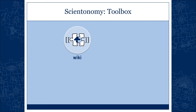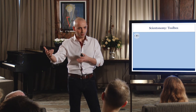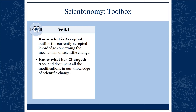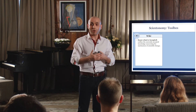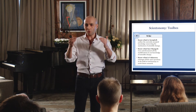The next thing we need is a wiki. While the database is a nice way of keeping historical data — the data of observational scientonomy — you also need a place to keep your theoretical knowledge and its current state. The best way of doing that is an encyclopedia-style wiki. It would allow us to outline the currently accepted knowledge concerning the mechanism of scientific change, know what is accepted, know what has changed, and trace all modifications in our knowledge. It would also catalog all open questions in the field to assist future research.